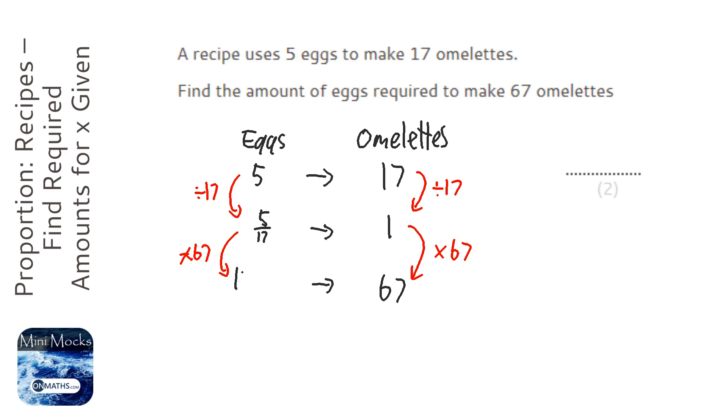And I get 19.705. Now, with eggs, you can only have a whole egg. So it's either going to be 19, 20, 21.